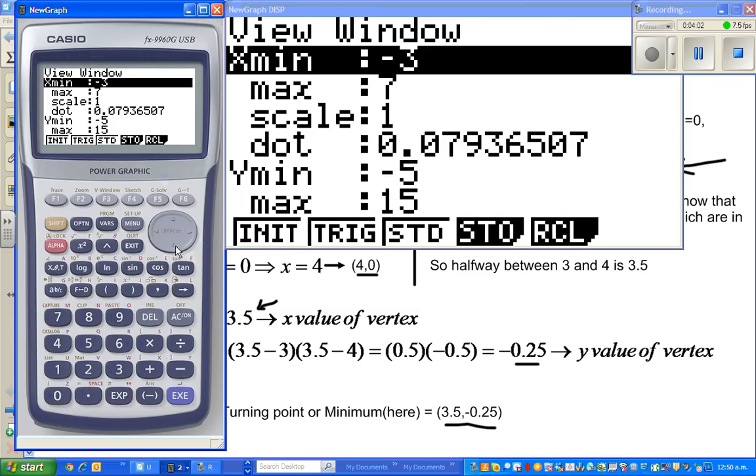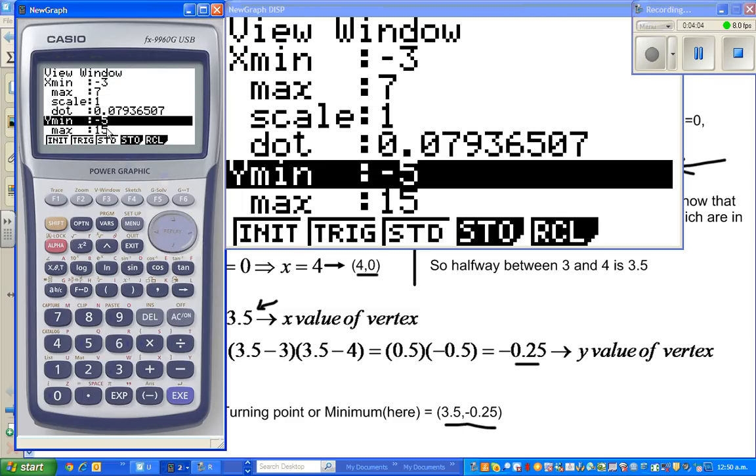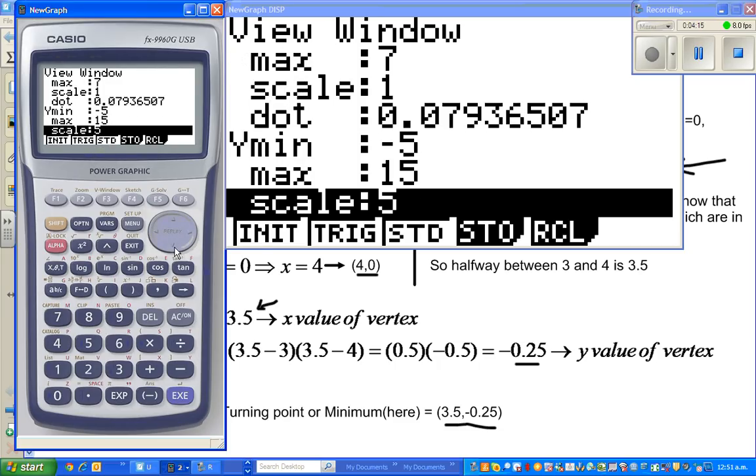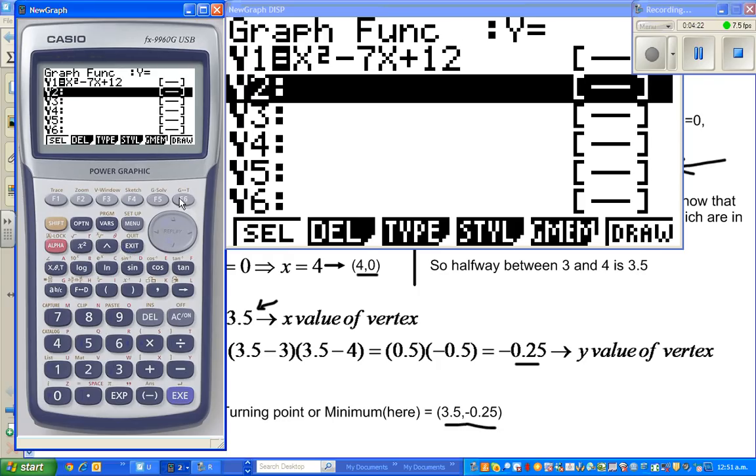Don't worry about the dot. For the y minimum I have taken negative 3 and the y maximum I have taken 15, the reason being I know that the y-intercept is 12, so I have to have 15. I have taken a scale of 5. You can exit from here and then draw it.